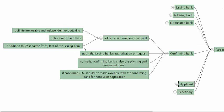The confirming bank adds its confirmation to the credit, which is a definite, irrevocable, and independent undertaking — in addition to the irrevocable independent undertaking of the issuing bank. The confirming bank's undertaking is to honor or negotiate. Honor can be a sight payment, an acceptance, or a deferred payment. This undertaking to honor or negotiate is in addition to and separate from the undertaking of the issuing bank.